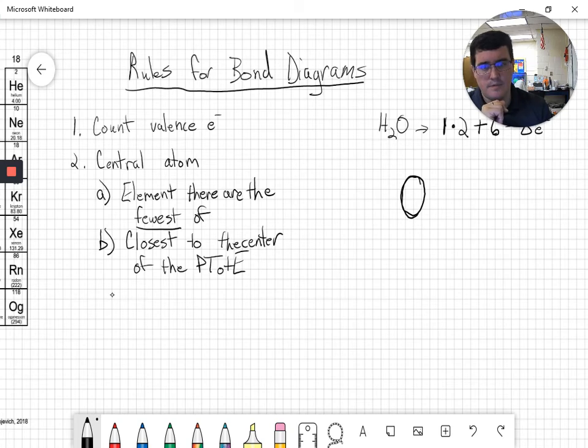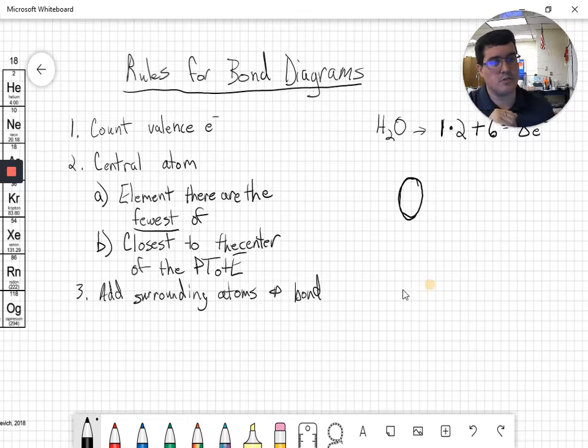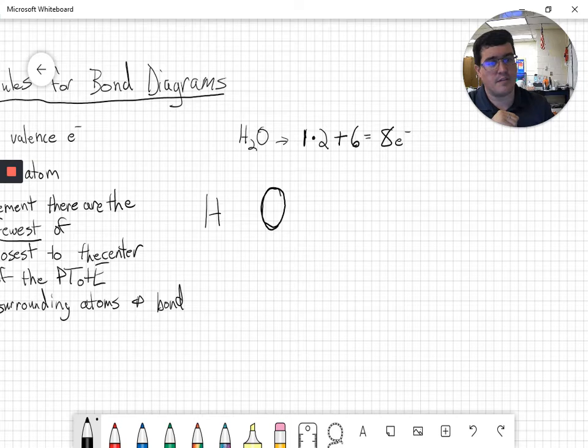Number three, rule number three, now that we've got our central atom, we're going to put the surrounding atoms and we are going to bond them to our central atom. So what are our surrounding atoms? Well, there are two hydrogens in this thing. So we're going to put two hydrogens on here, and we're going to draw bonds from them to oxygen.